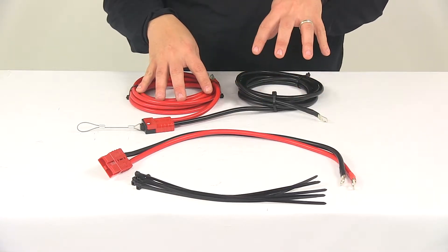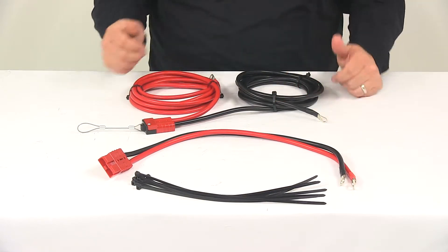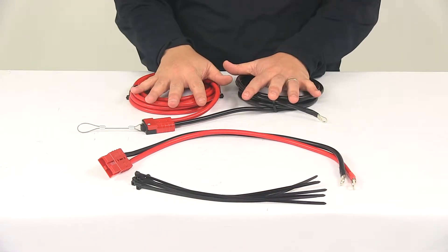Right here you're going to get your negative and positive wire, black and red, terminals already attached to it. These are going to measure 120 inches long.